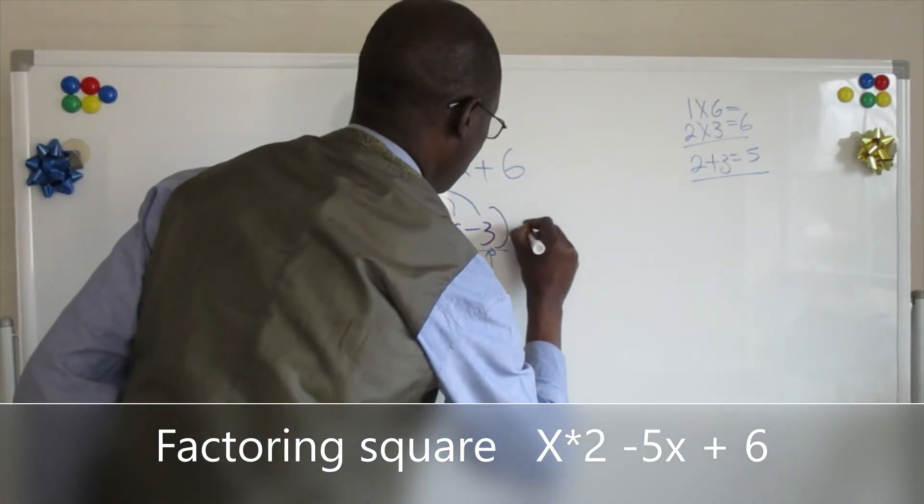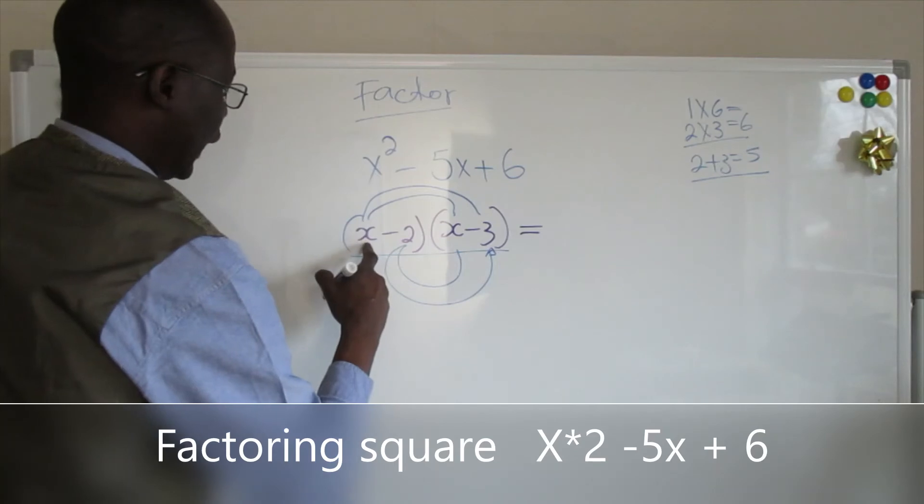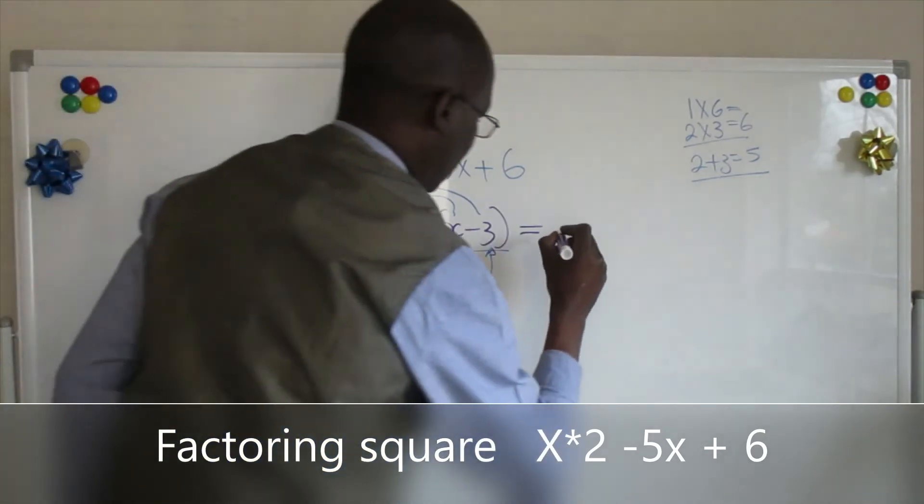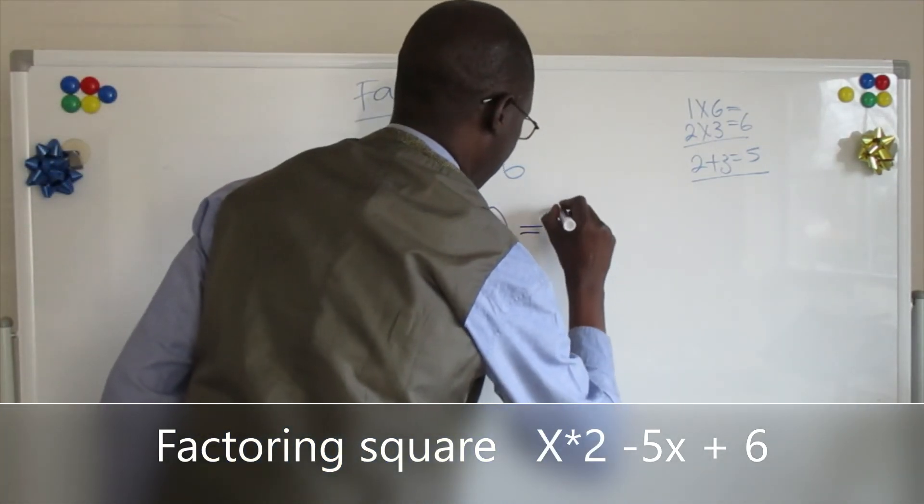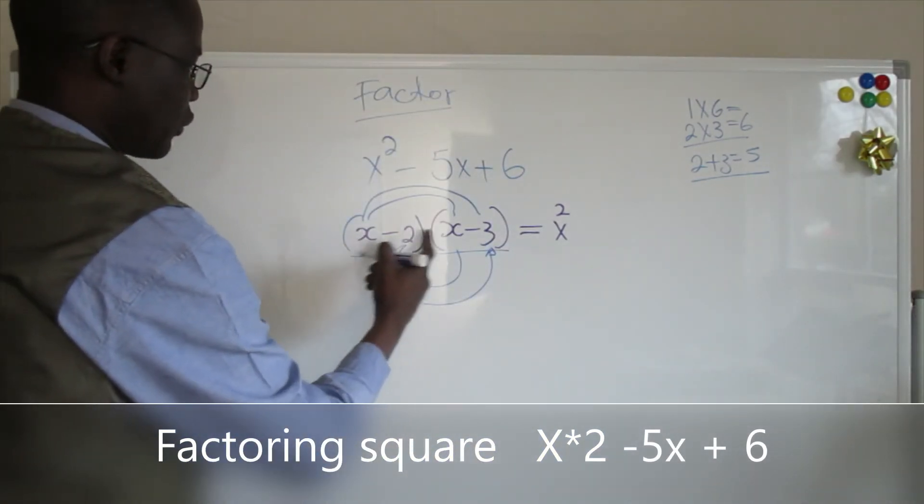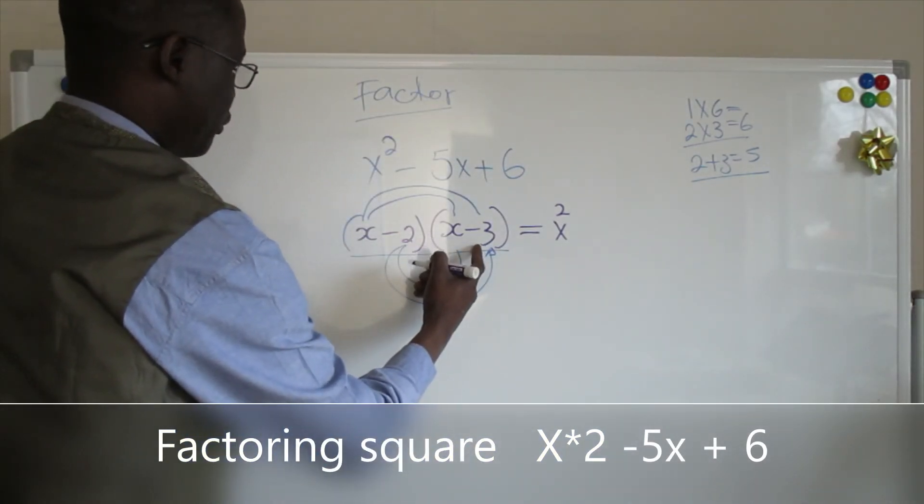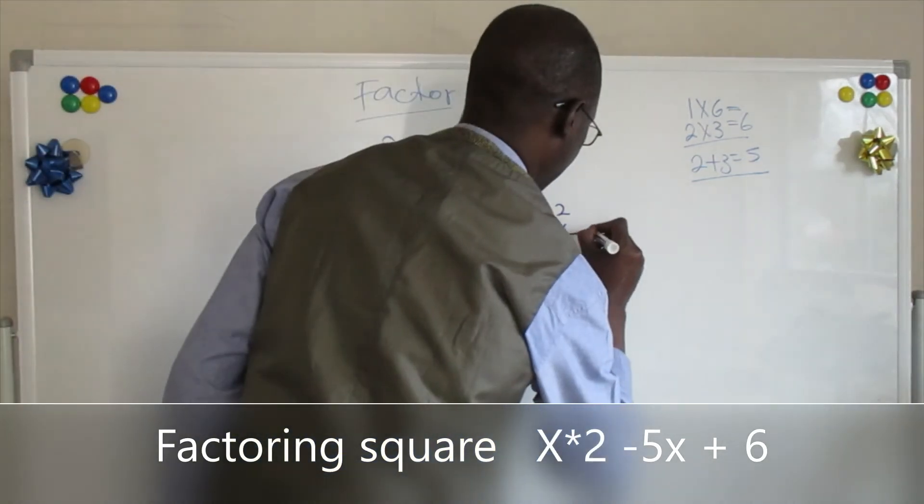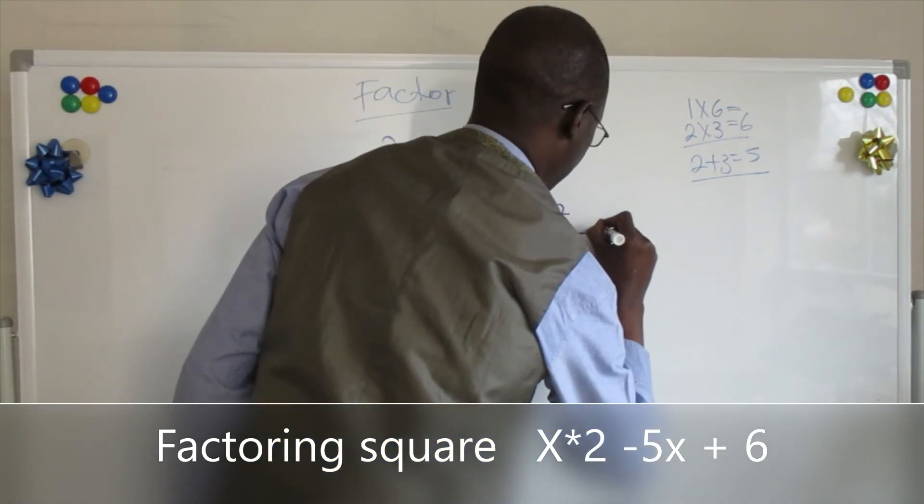So this one, let's say x times x is x squared. And x times negative 3 is minus 3x.